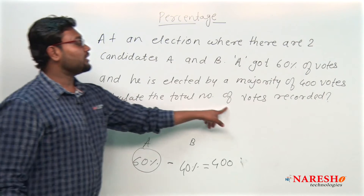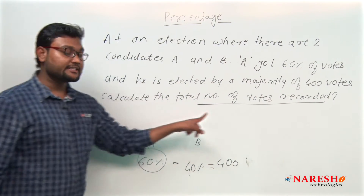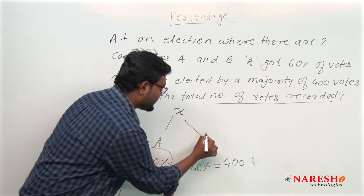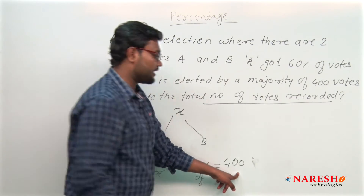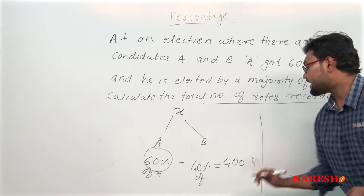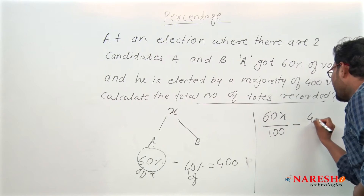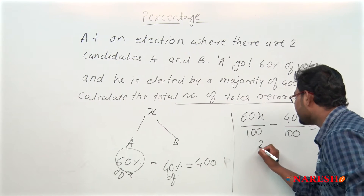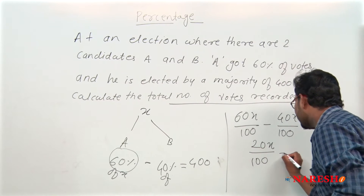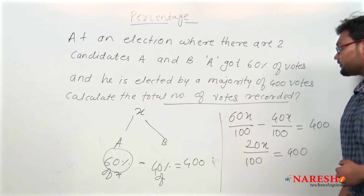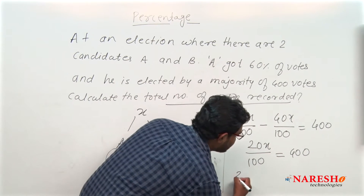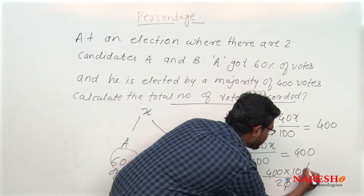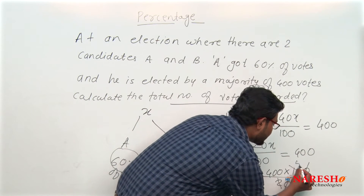Let us consider the total number of votes recorded as x. A is getting 60 percent of x and B is getting 40 percent of x. The difference is 400. So we write: 60x upon 100 minus 40x upon 100 equals 400. Solving this gives 20x upon 100 equals 400, and therefore x equals 400 multiplied by 100 divided by 20.